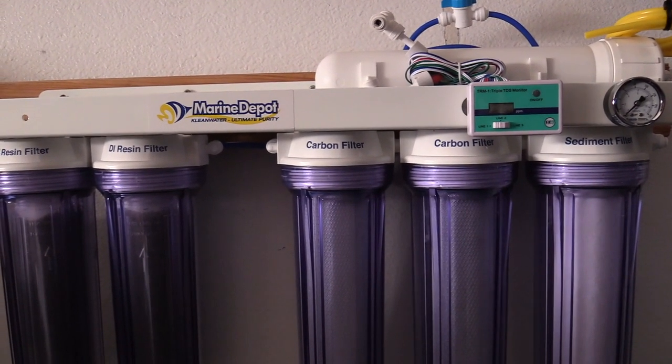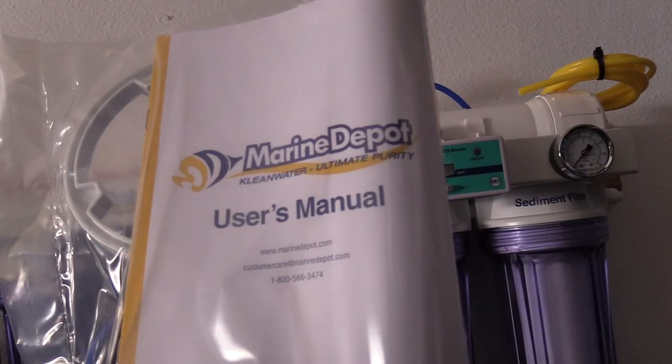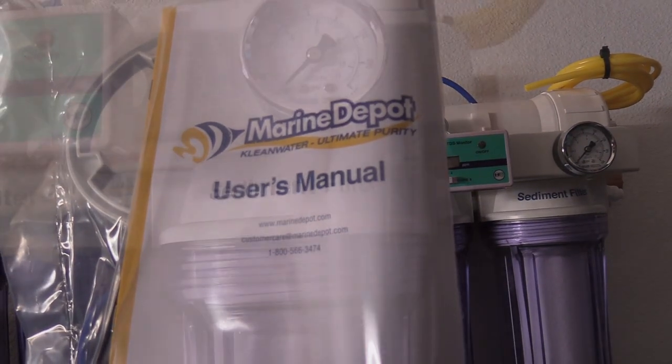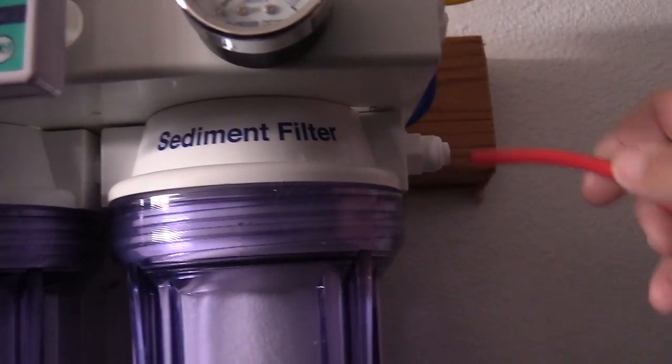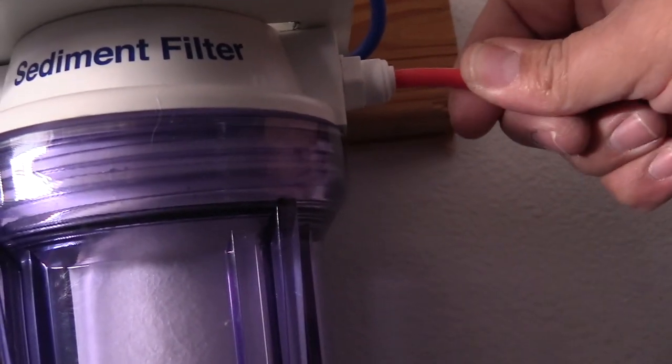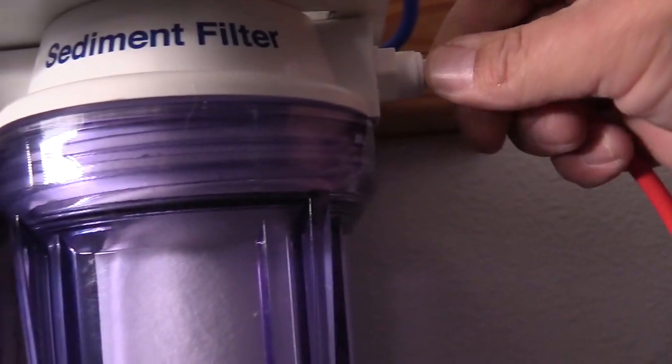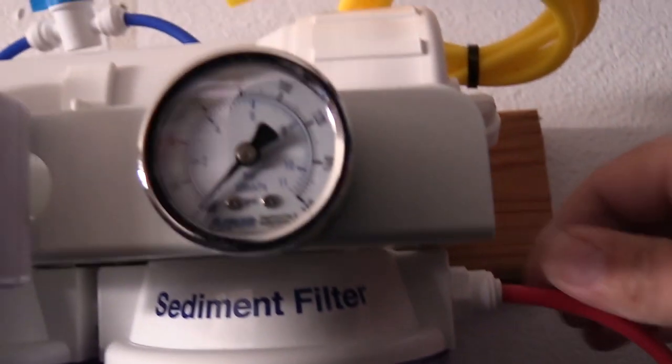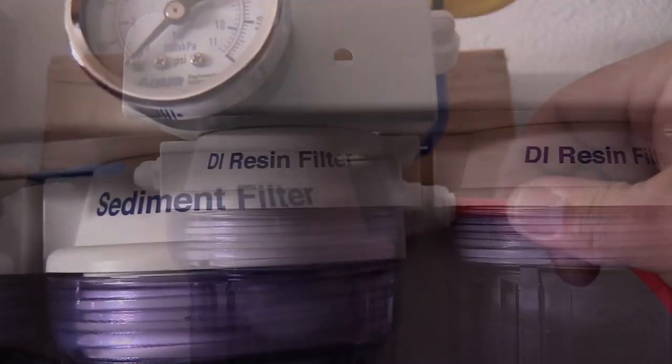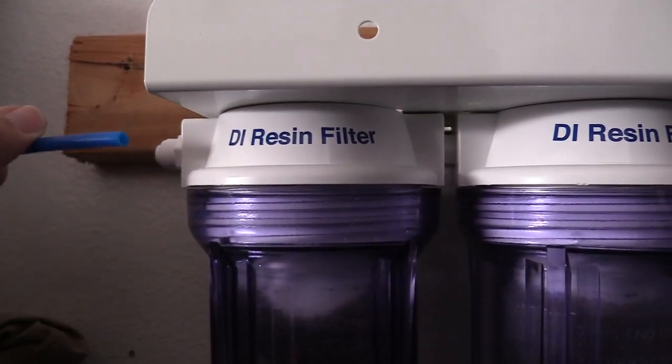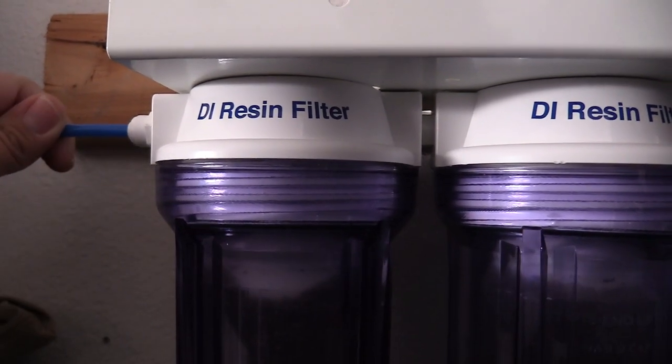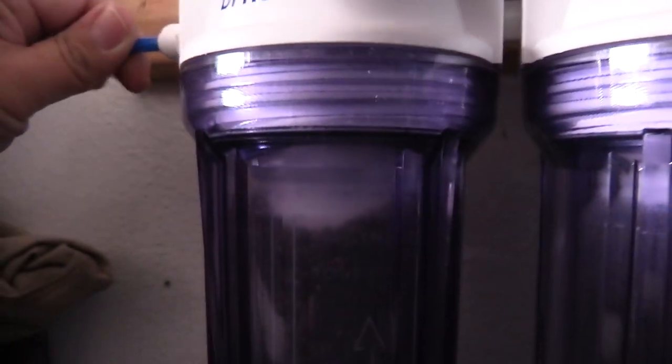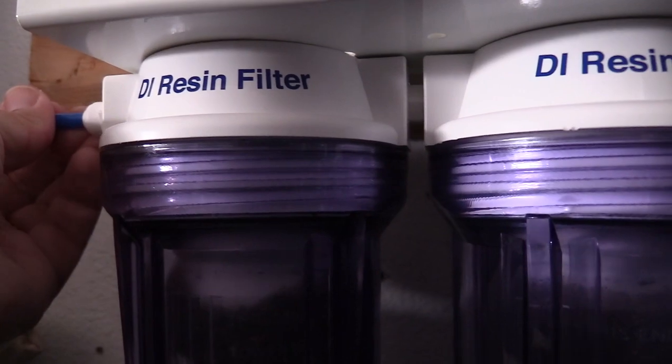Installation was very easy. When it came down to plugging in the hoses, I actually did have to read the instructions. Straightforward. It goes in line into the sediment filter. Really easy to do, just connect it and push it. The output comes out of the DI resin, which is going to be your last stage of your RODI system.